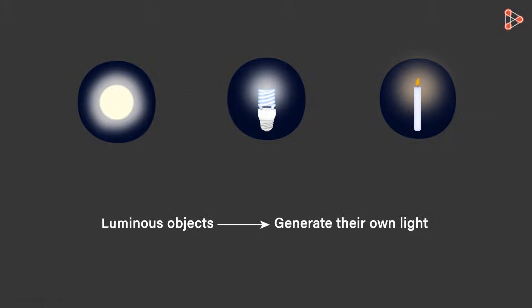Some objects like the sun, burning candle, and fluorescent bulb emit light of their own. They are also called luminous objects.